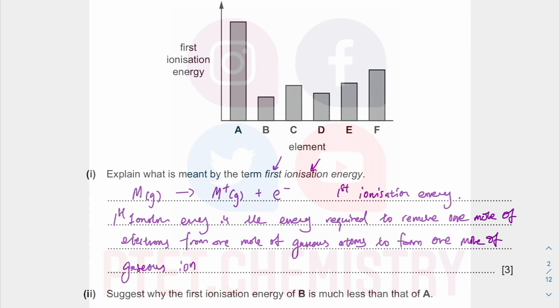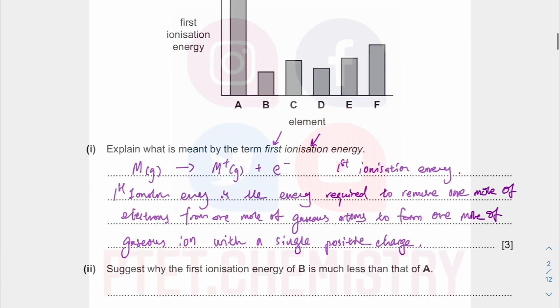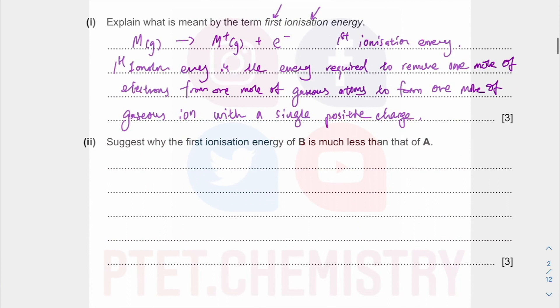You're forming one mole of gaseous ion, but the ion is very specific because you're talking about a first ionization energy. So it's an ion with a single positive charge. Just like that. Three marks. I can't believe it.